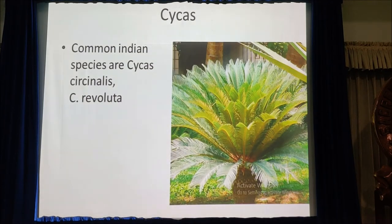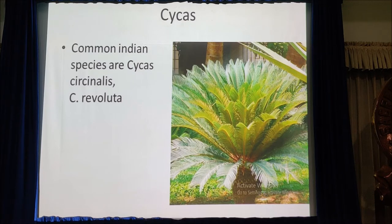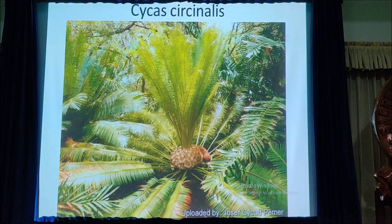The type we have to study in gymnosperms is Cycas. Cycas is a widespread genus found mostly in the eastern hemisphere. There are about 25 species worldwide, of which 6 species are common in India. The common Indian species are Cycas circinalis and Cycas revoluta.